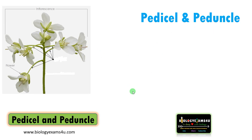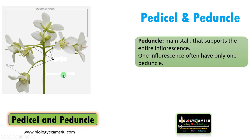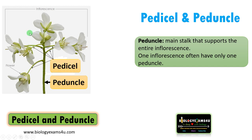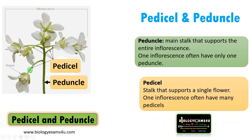The next term is pedicel and peduncle. The peduncle is the main stalk that supports the entire inflorescence — a group of flowers forms an inflorescence. This main stalk is called the peduncle. Whereas the stalk that is connected to an individual flower is called the pedicel. One inflorescence often has a single peduncle, whereas the pedicel is the stalk that supports a single flower. One inflorescence often has many pedicels, each supporting one flower.